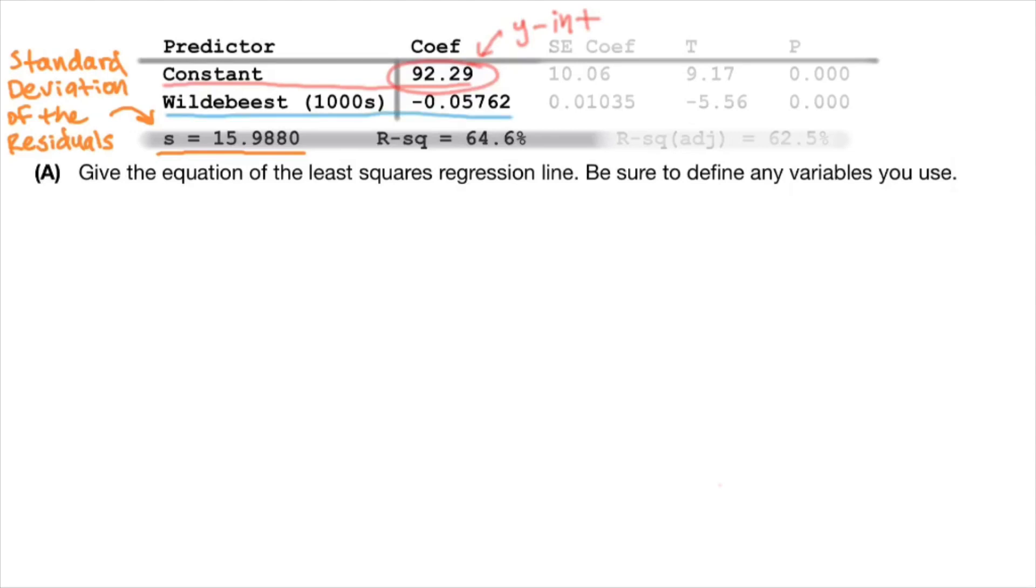So let's talk about Wildebeest and this negative 0.05 number. So this number is the coefficient. That's what C-O-E-F in the header stands for. It's the coefficient associated with our predictor variable, Wildebeest. So our x variable has a coefficient of negative 0.05762. That means that that number is the slope.